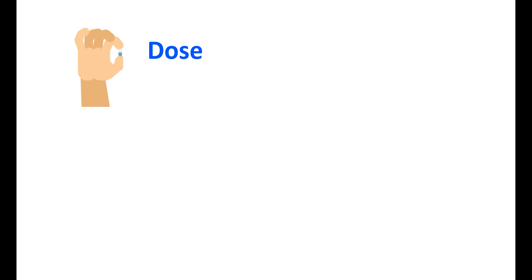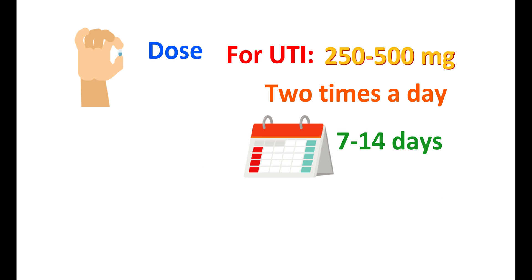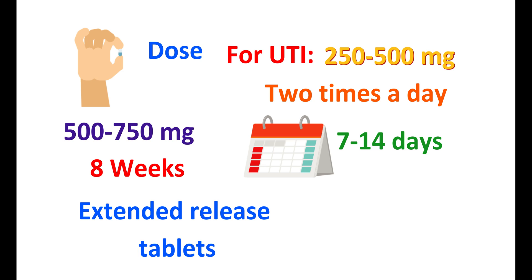The dose of ciprofloxacin is variable based on the patient's condition as well as purpose of use. For urinary tract infection, it can be given at a dose of 250 to 500 mg two times a day for 7 to 14 days. It can also be used at a dose range of 500 to 750 mg for treating other infections like respiratory tract infections or bone infections, given for up to 14 days or in some cases up to 8 weeks. The dosage, duration, and frequency depend on the type of infection. Immediate release tablets are given two times a day, whereas extended release tablets are given once a day.